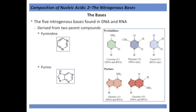Now we look at the bases. There are two general classifications: the pyrimidine bases, which look like pyridine but have an additional nitrogen at position three, and the purine bases, which look like a pyrimidine but with an additional five-membered ring appended to it.